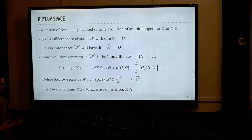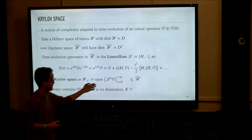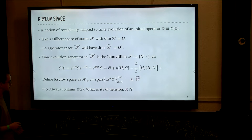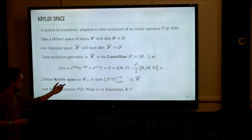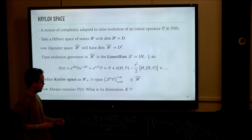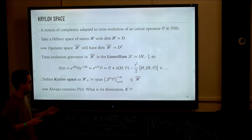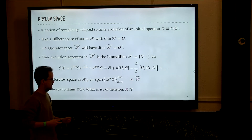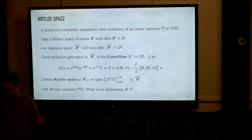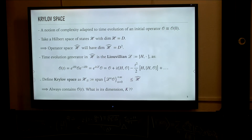Just by observing the expression of the time evolution of the operator in the Heisenberg picture, we see that at an arbitrary time the time-evolved observable is just a linear combination of nested commutators of the Hamiltonian — that is, consecutive powers of the Liouvillian acting on this operator. This is just a linear combination of elements, and we can consider the Hilbert space constructed by the span of all of them. We call this Krylov space.